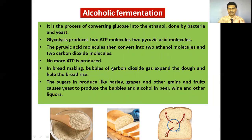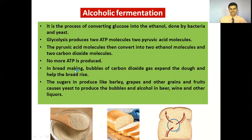Now let's move towards alcoholic fermentation, another type of anaerobic respiration. In alcoholic fermentation, alcohol is formed from glucose, done by bacteria and yeast. After glycolysis, two ATP molecules and two pyruvic acid molecules are formed. This pyruvic acid then converts into two ethanol molecules and two carbon dioxide molecules. No more ATPs are produced here. In confectionery, during bread making, bubbles of carbon dioxide gas expand and from the sugar, in the presence of yeast, CO2 bubbles are evolved — that's why bread is porous in nature.